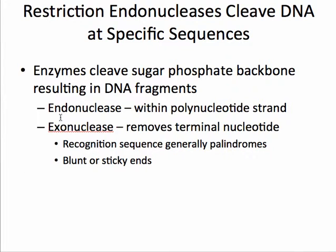There are two types of these enzymes that cut the sugar-phosphate backbone of a nucleic acid. The first type is endonucleases, which cut or cleave the molecule within the polynucleotide strand. Exonucleases cut and remove the terminal residues or nucleotides off the strand. Interestingly, these enzymes more often than not recognize and cut nucleic acids that are palindromes — sequences that read the same way forwards and backwards. They can also cause different types of symmetry in the cuts, producing what we call blunt or sticky ends.